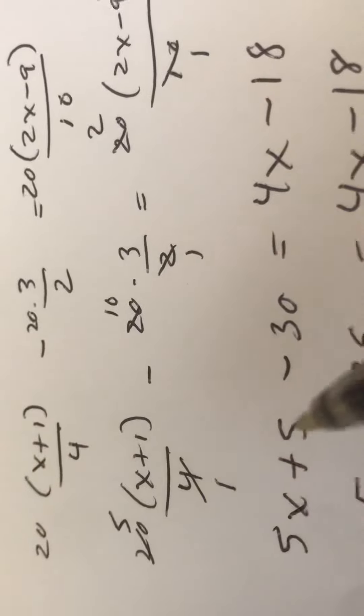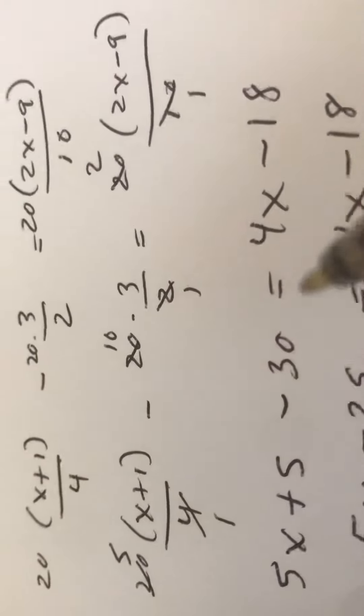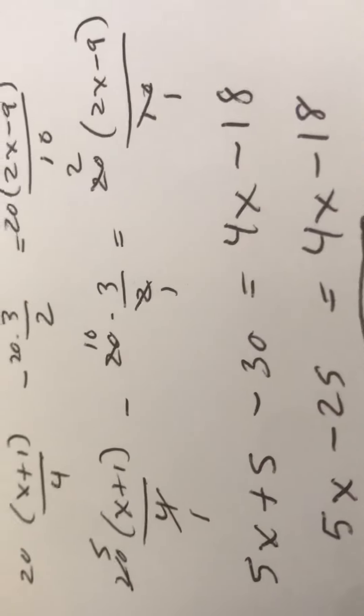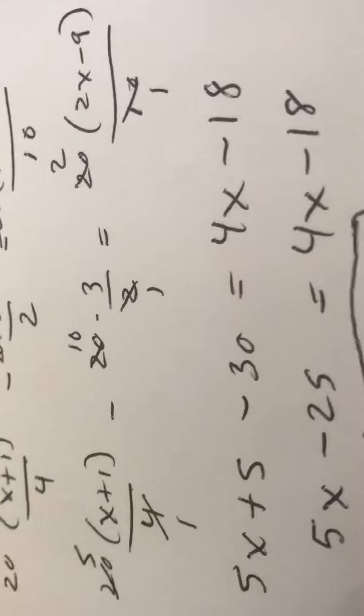I use the distributive property. 5x plus 5 minus 30 equals 4x minus 18. I like to simplify each side separately.